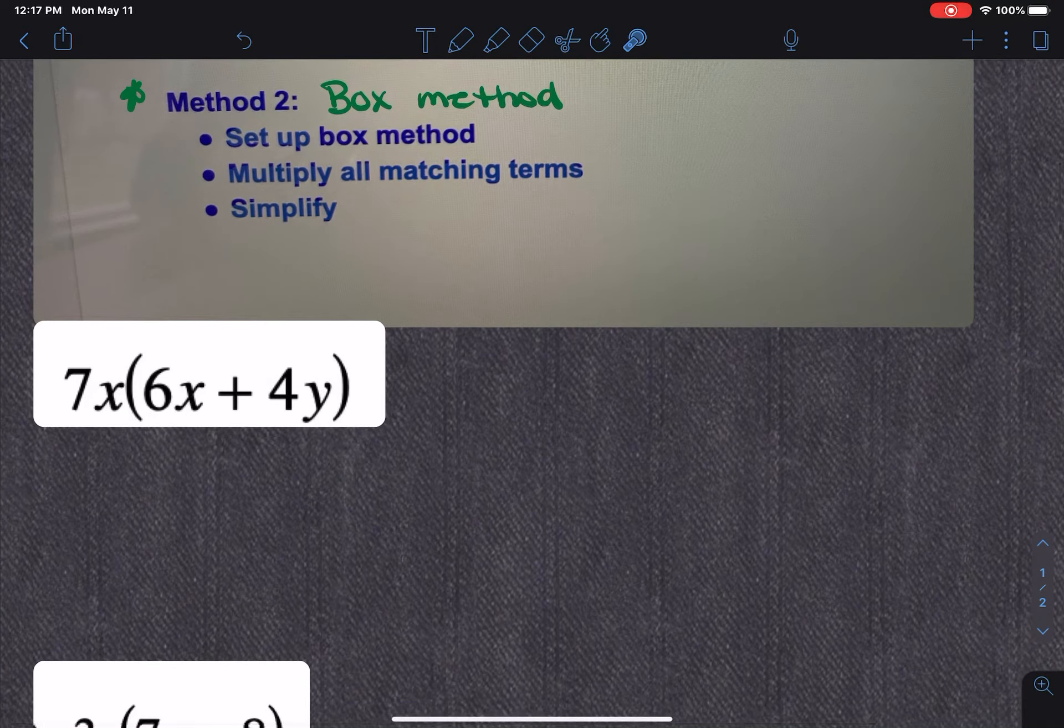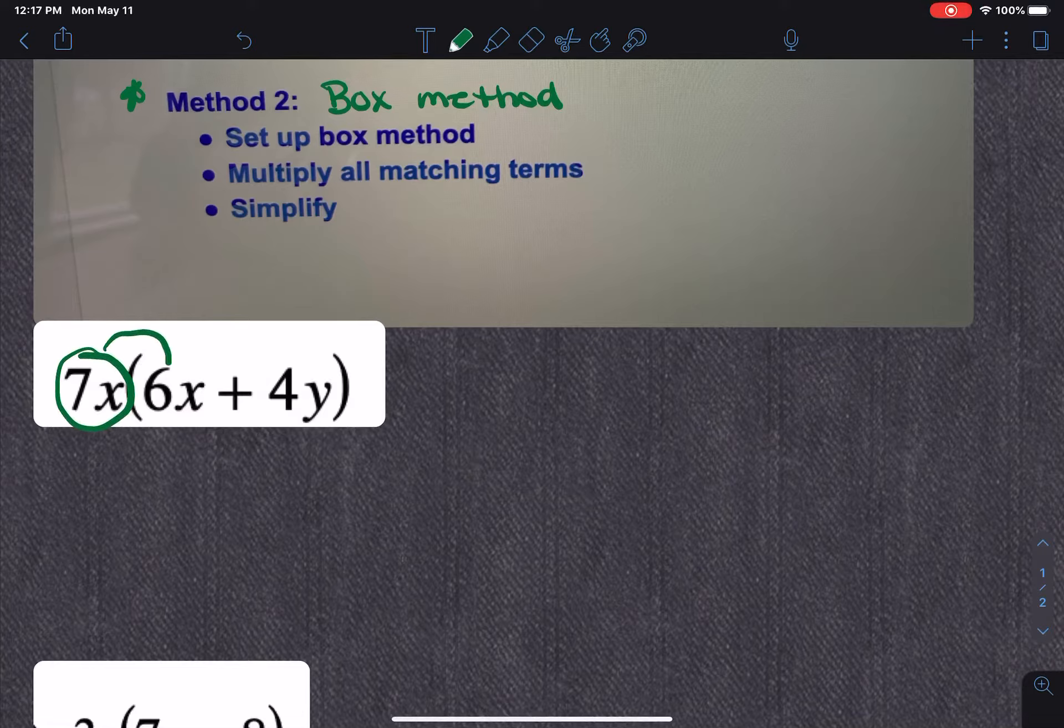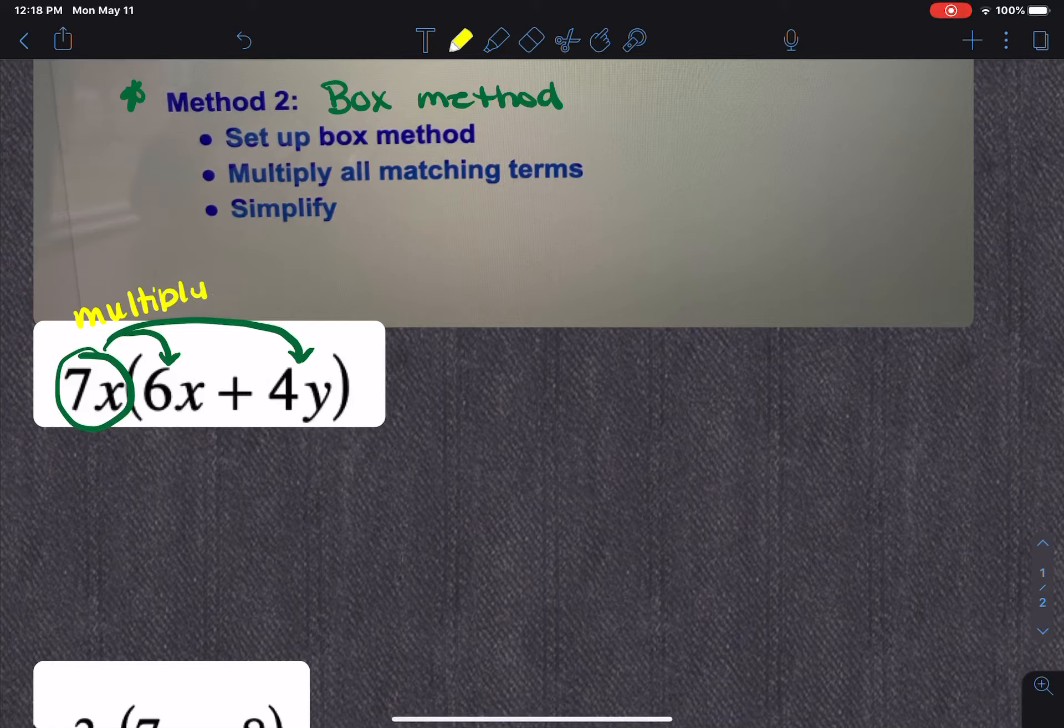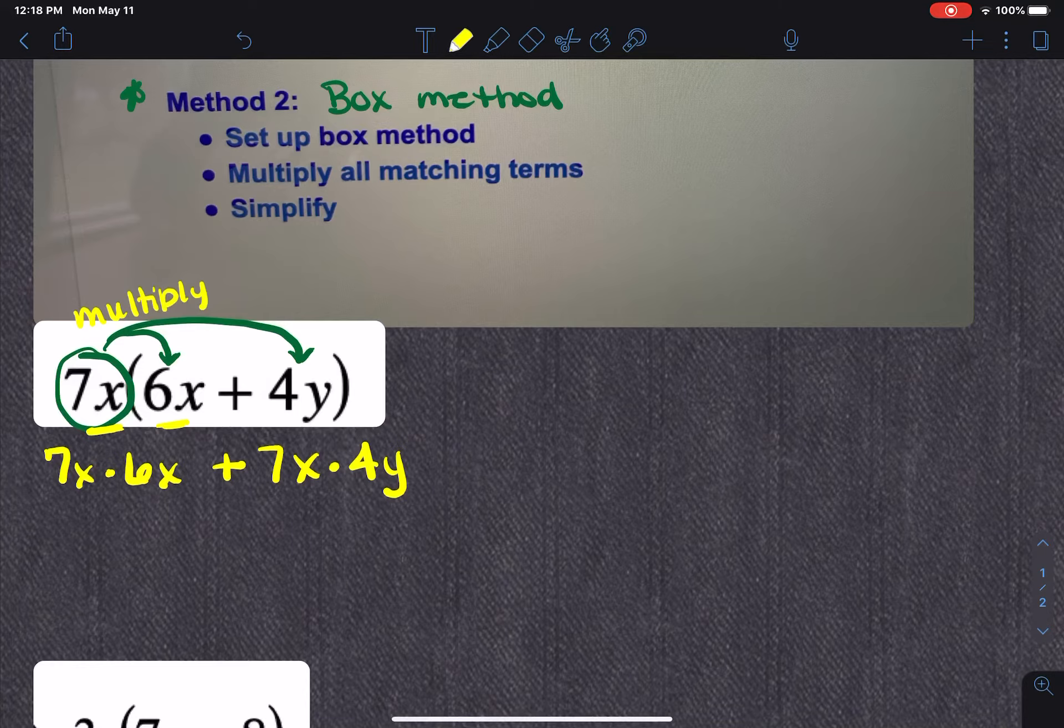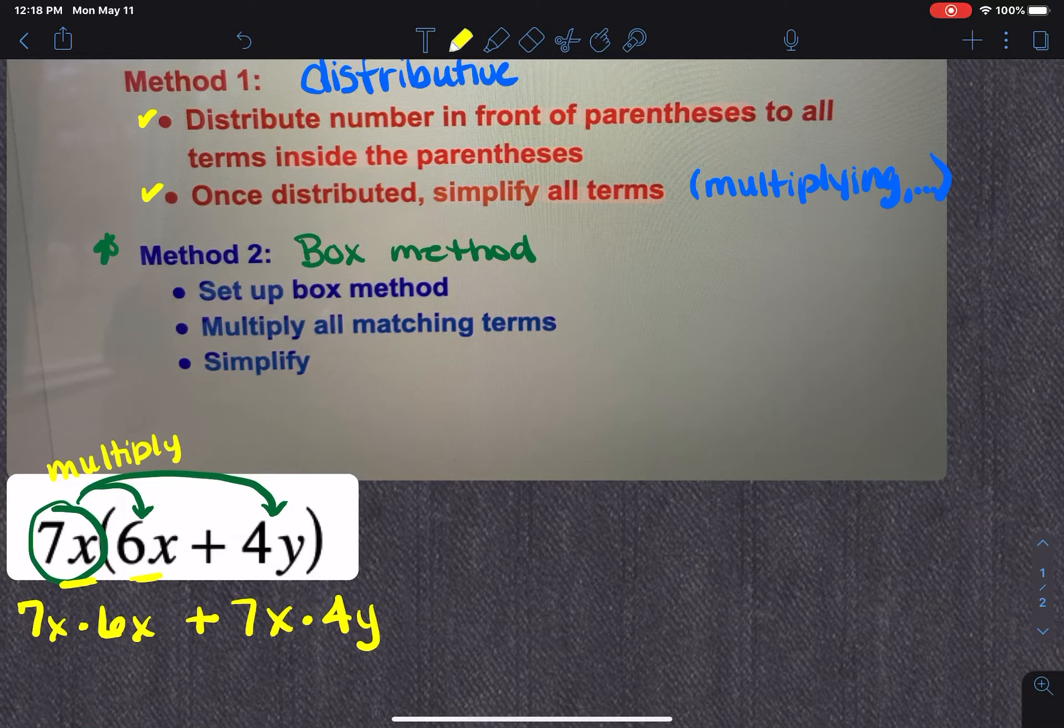So here's an example of the first one. So I have 7x, parentheses, 6x plus 4y. So in this kind of a problem, what we're going to have to do is distribute this to each one. So when I do the distributive method, remember that means that I'm going to have to multiply. So I'm going to go through this first one and show you a little bit about how distributive property works. So if I distribute, that means I have to do 7x times 6x because those are the first two terms. And then I'm going to have to do 7x times positive 4y. Okay, so in our method, that was the distributive part.